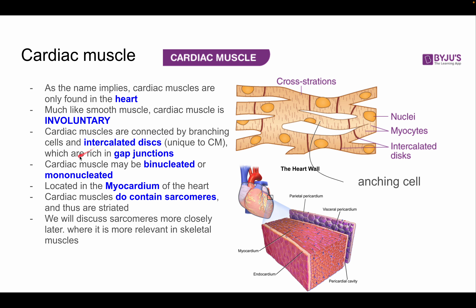Intercalated discs are rich in gap junctions, which spread electrical depolarization signals. Cardiac muscles may be binucleated or mononucleated — they are not restricted to one nucleus but usually have a maximum of two. They are located in the myocardium of the heart. The layers of the heart are the endocardium, myocardium, and pericardium, with the myocardium being the thickest.